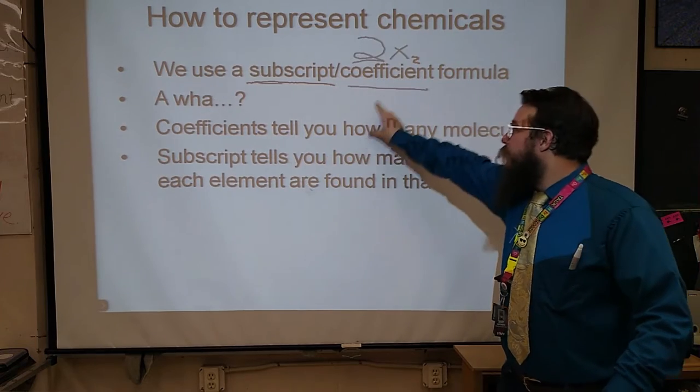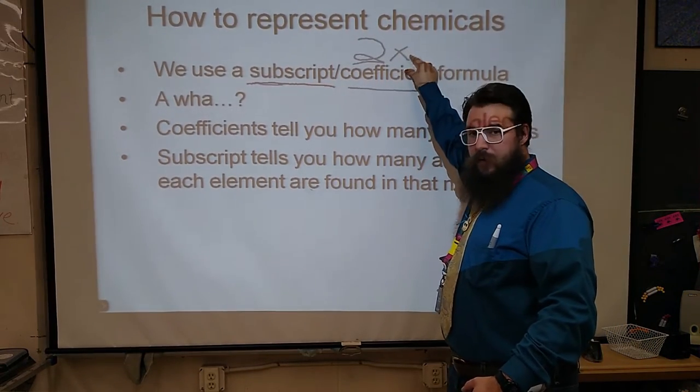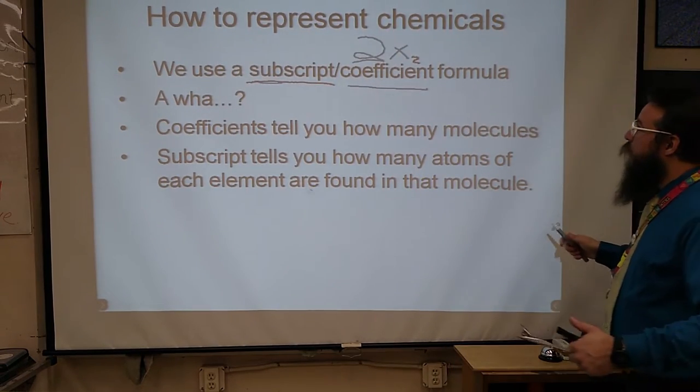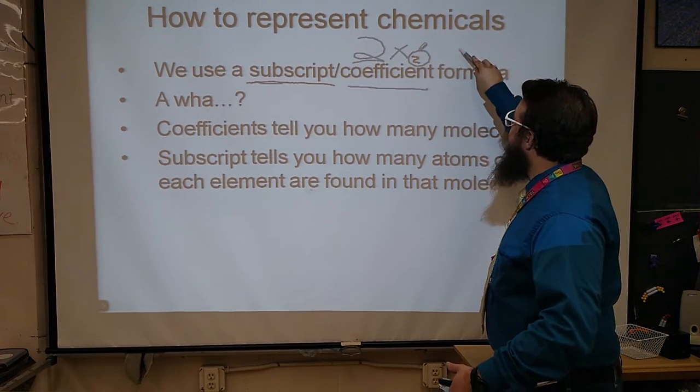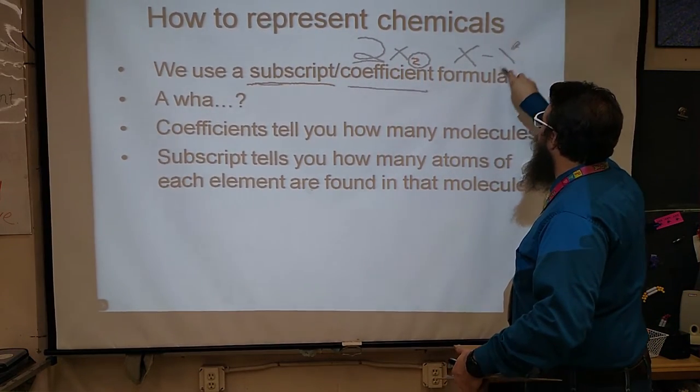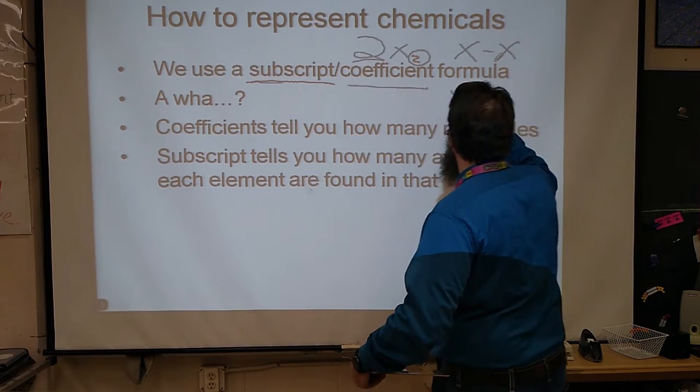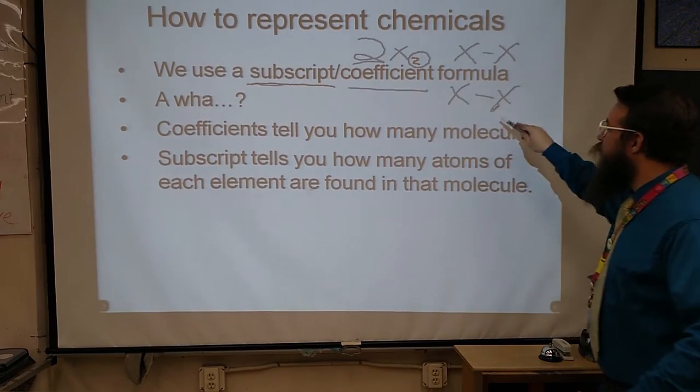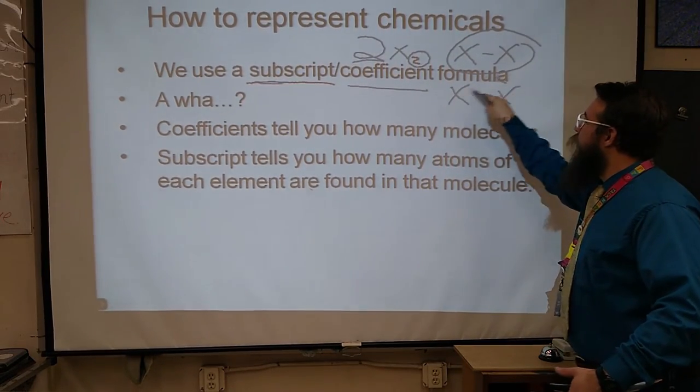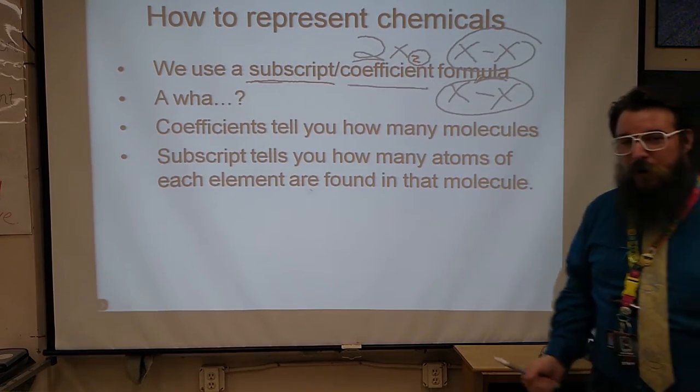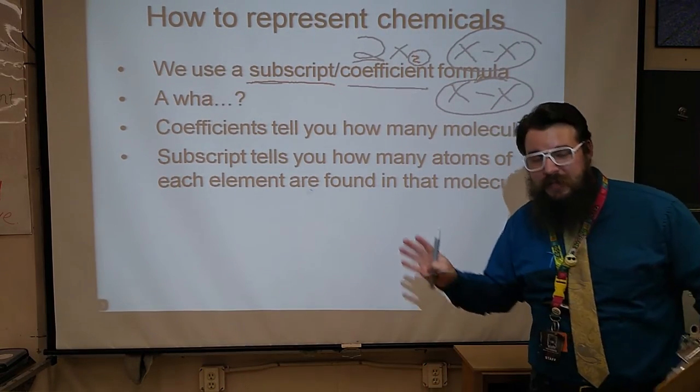Coefficient tells you you have that many of those things. The subscript tells you how many elements are in the molecule. So, for example, right here, that means that we have x bonded to x. The 2 here means that we have 2 of them. So here we have 2 x molecules, whatever element x is. Sounds fun and sci-fi.